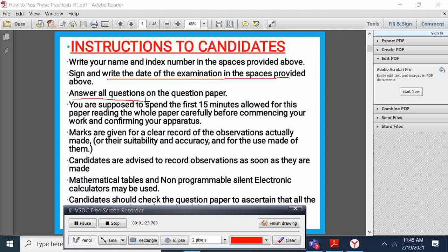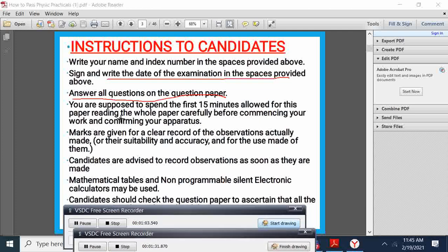We are supposed to answer all the questions in the equation paper provided. Most important, the first 15 minutes in this paper we are allowed to read the whole paper carefully before commencing work and confirming your apparatus. Marks are given for clear record of observations actually made, for suitability and accuracy. We are supposed to record observations as soon as they are made. Don't make observations then come to record them later.